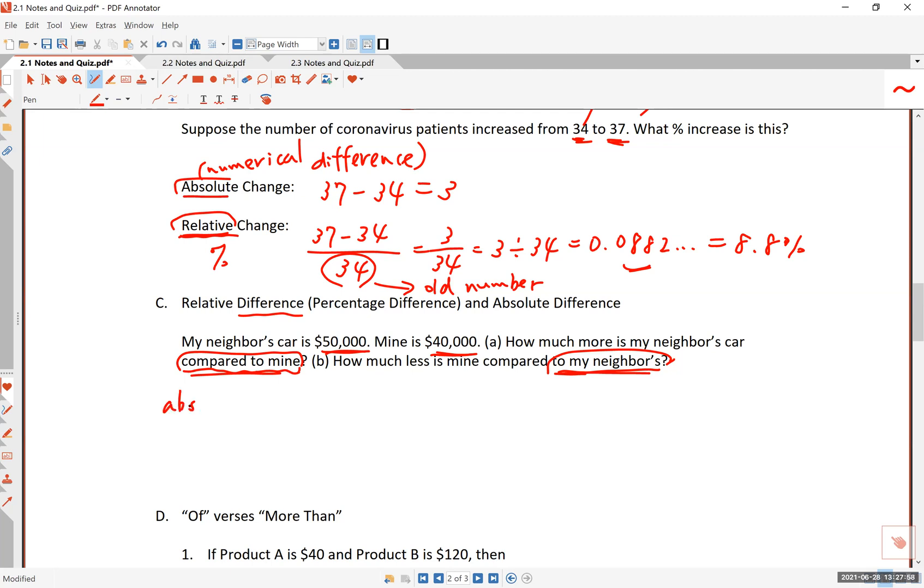Now the absolute difference. There is a thing called absolute difference. And it's just like before. Absolute difference is the numerical difference between my car and his car. And so $50,000 minus $40,000. Of course, it's easy to know. The answer, the absolute difference between those two car values is $10,000. So the cars' price or the cars' value differ by $10,000.